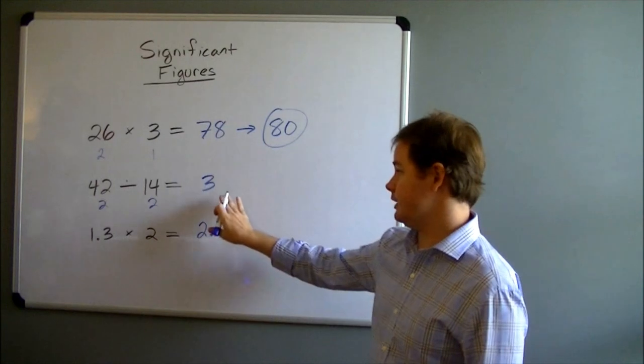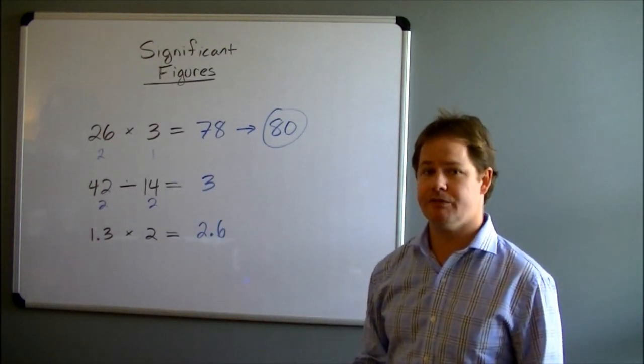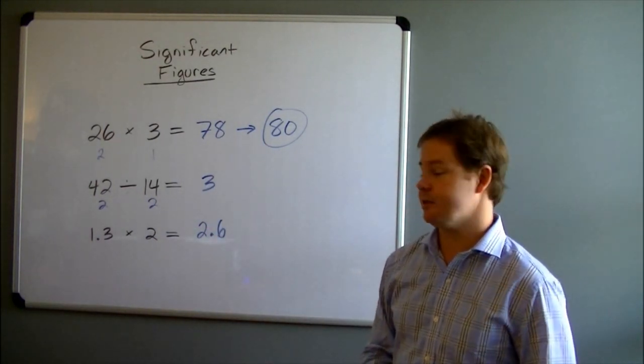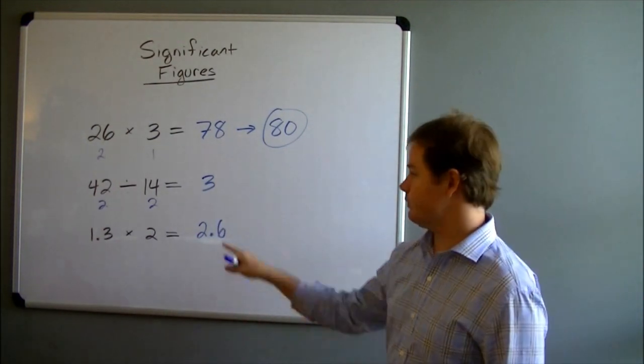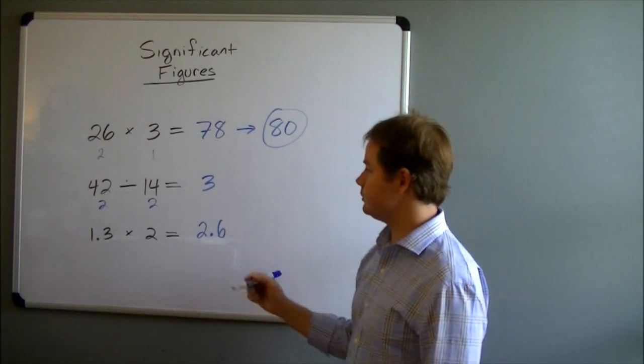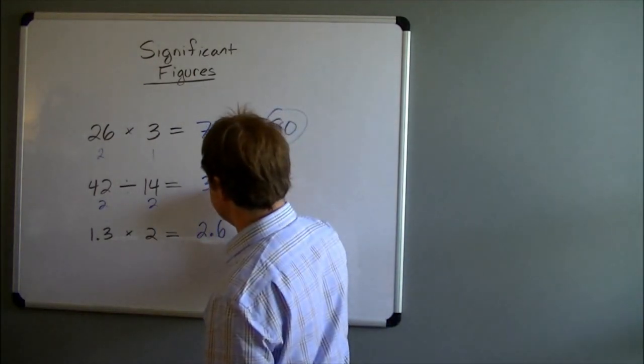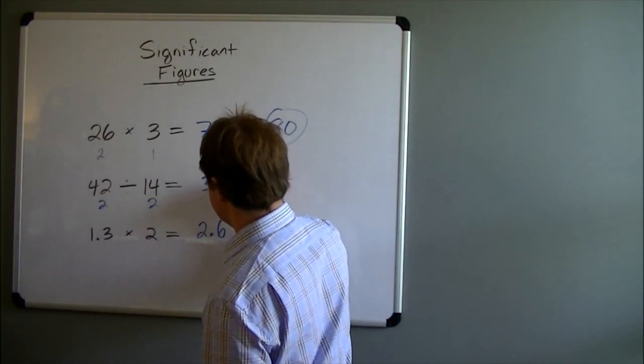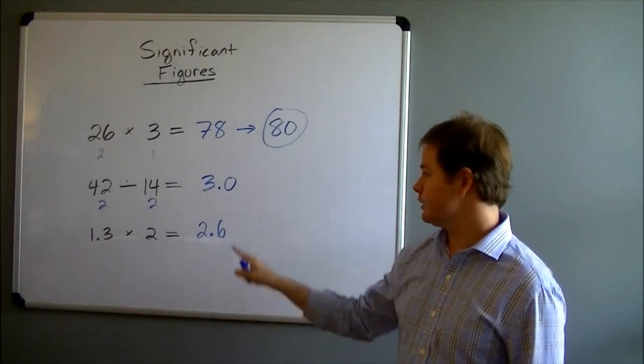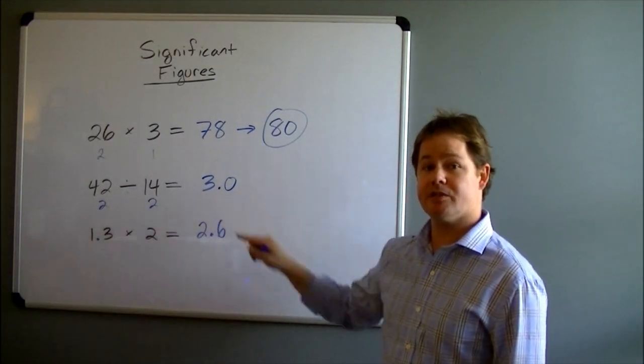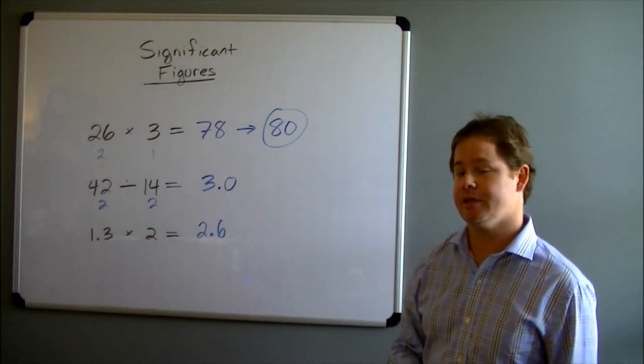Now in this case, when we divide 42 divided by 14, if you were to type that into your calculator, your calculator would just give you 3 as a result. But in order for this number to have 2 significant figures, we need to add a zero after our decimal. Because remember, the zeros to the right of your decimal do count when you're dealing with significant figures.